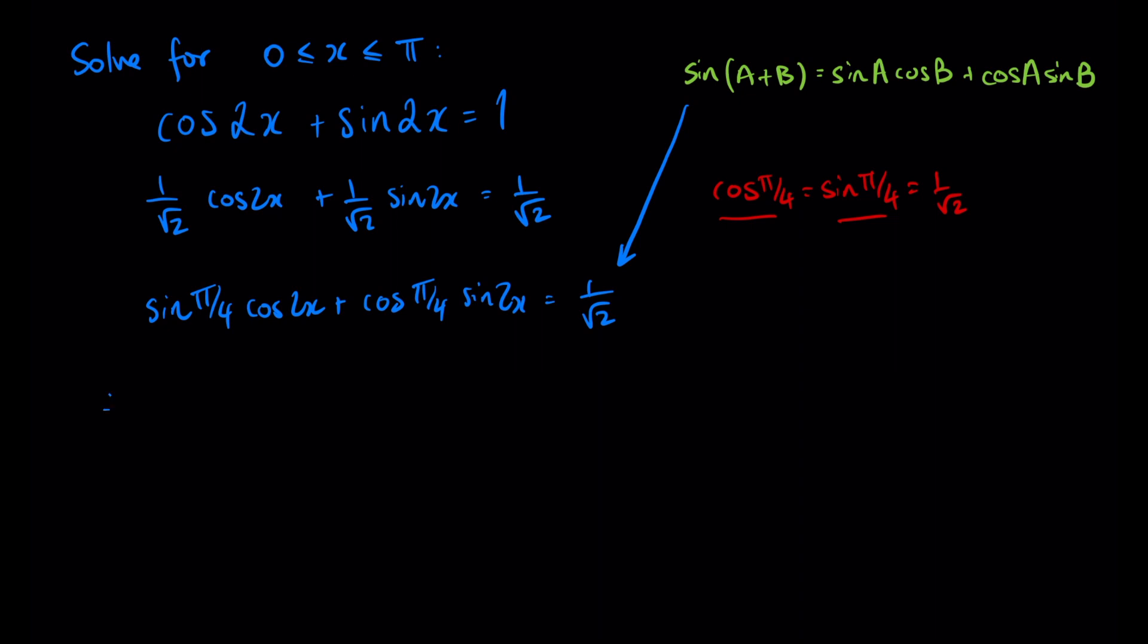Therefore sine of 2x plus π on 4 equals 1 on root 2, and this is an equation we can solve.